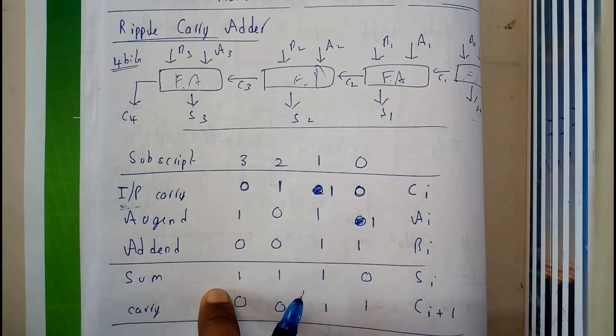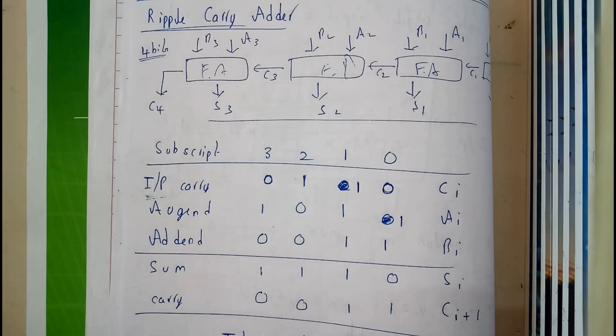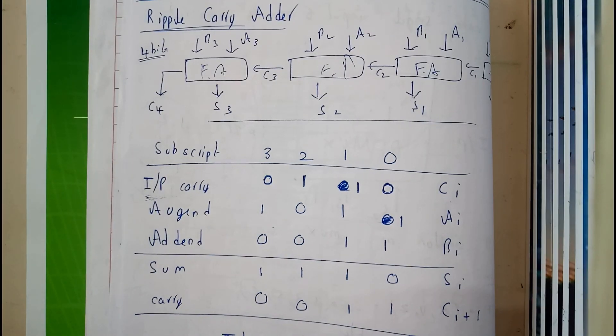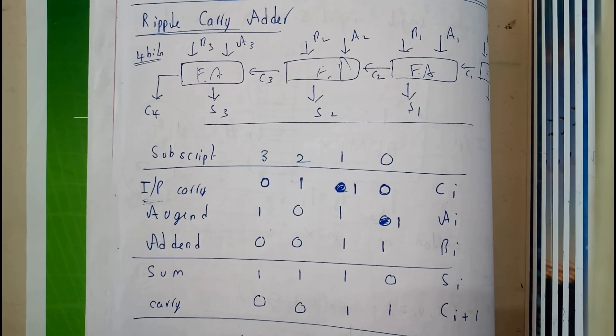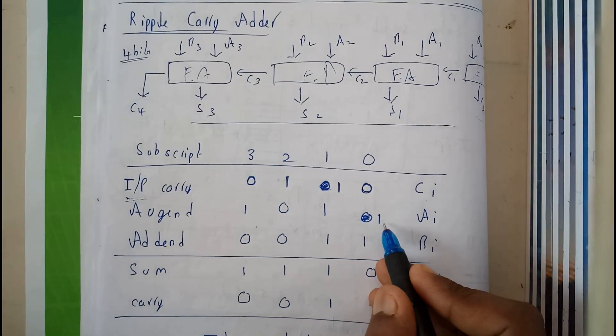So sum, according to our assumption, previously we took sum down, right, previously we took sum on the right side, that is on down and carry up. So let us do it, you will be understanding why I am saying like that.